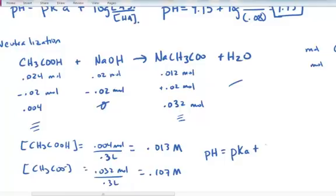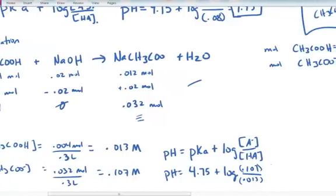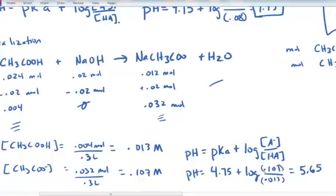As a shortcut, using the Henderson-Hasselbalch equation: pH equals 4.75 plus the log of the anion, now 0.107, divided by the acid, now 0.013. The pH is now 5.65. So I'm almost outside the range of the buffering capacity because I've almost used up all of the available acid to react with the added base.